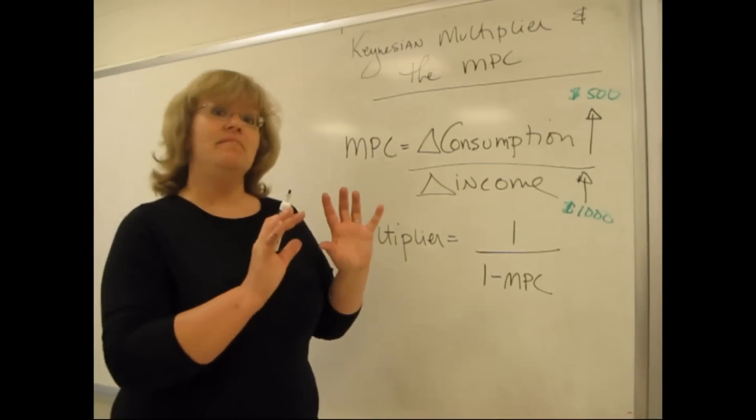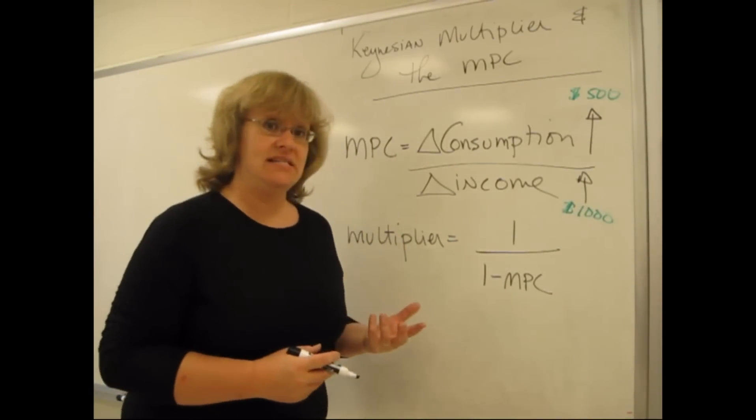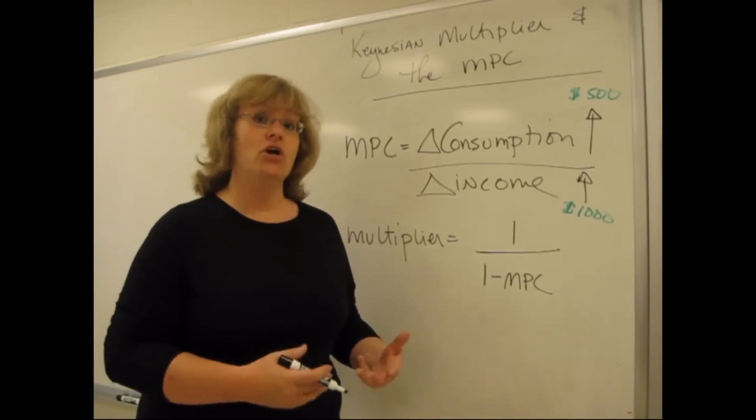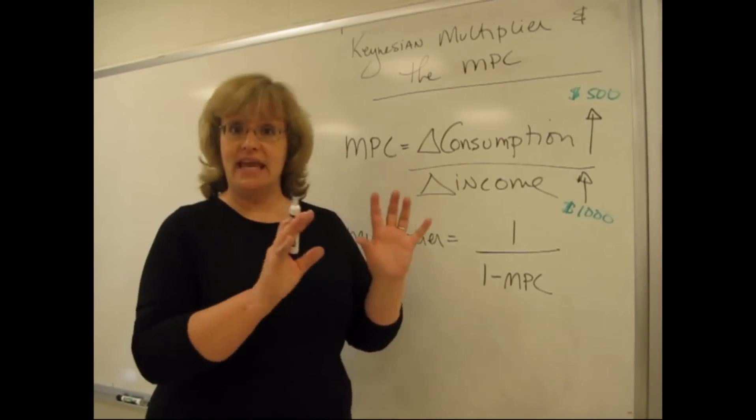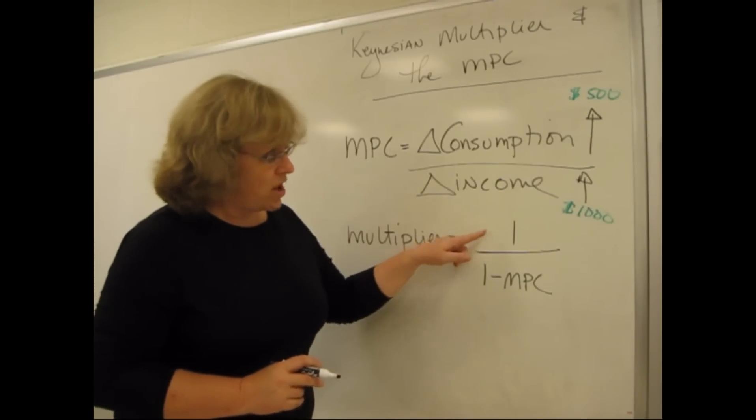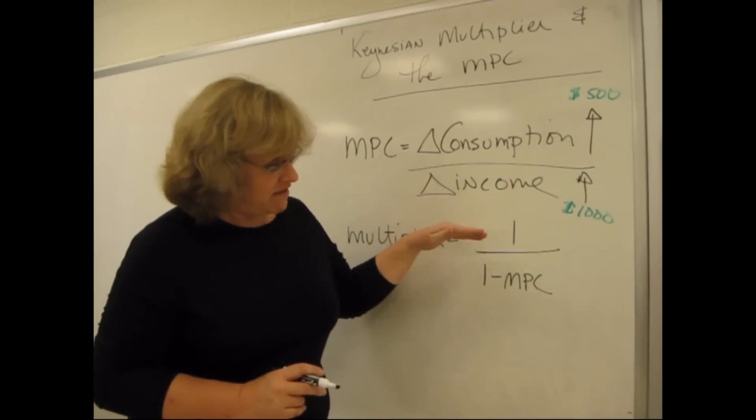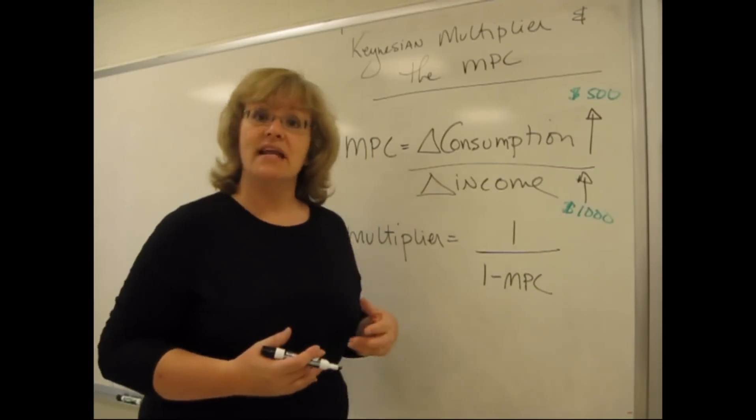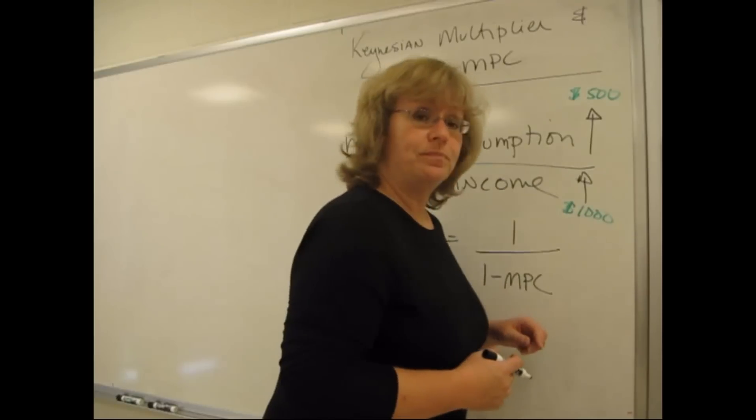So that's the basic concept of what the MPC, the marginal propensity to consume is. And it's connected to a really important idea in the Keynesian model called the multiplier. The multiplier is equal to one divided by one minus the MPC. And I want to talk about what it means and how it works over here in this example.